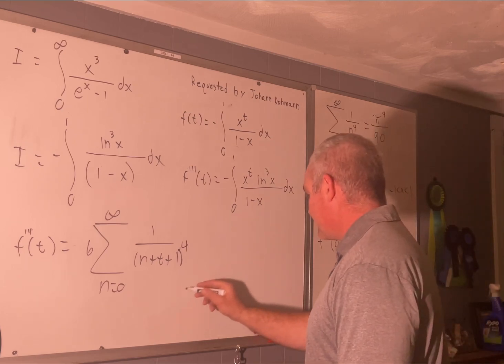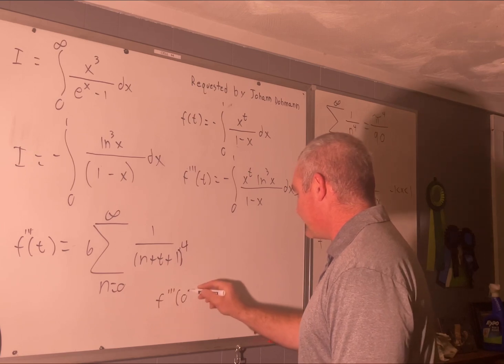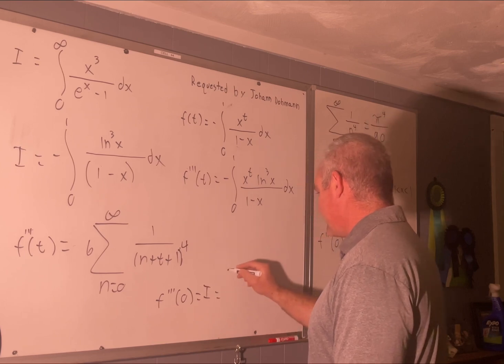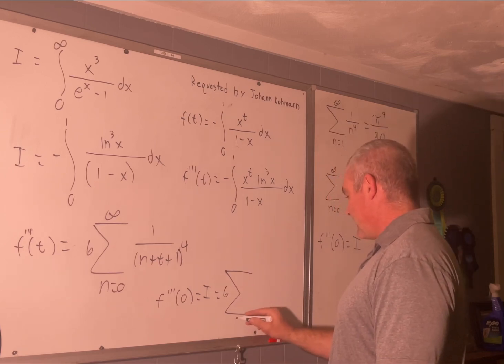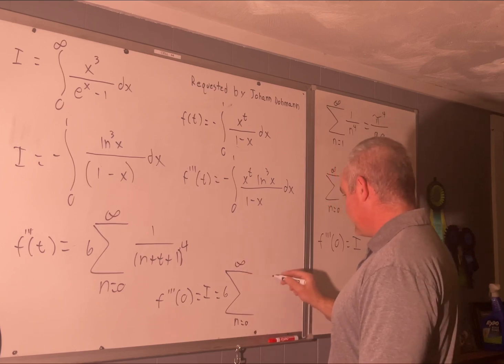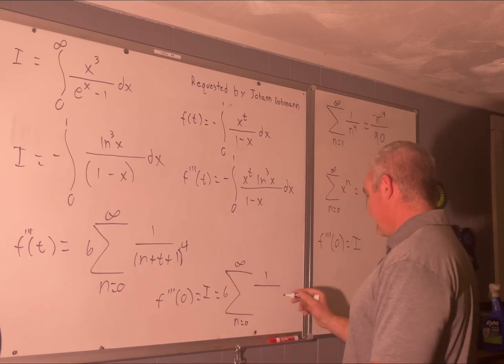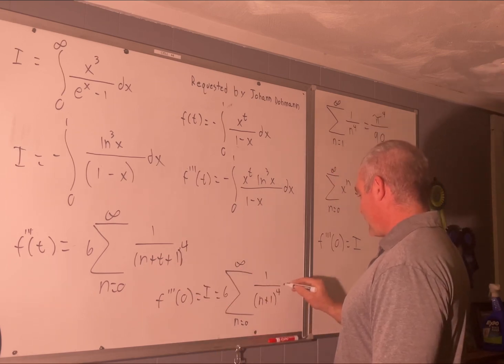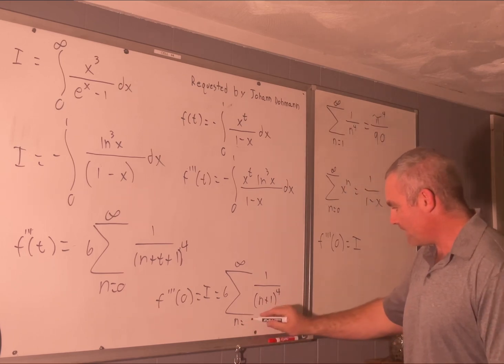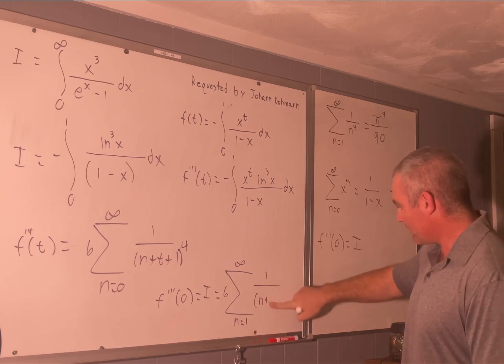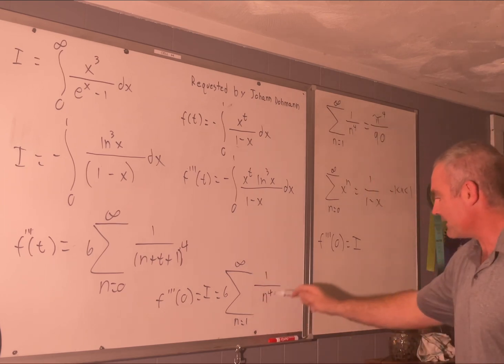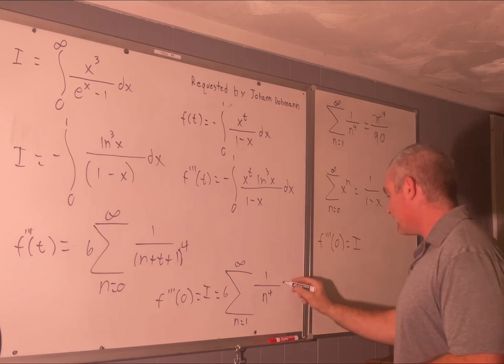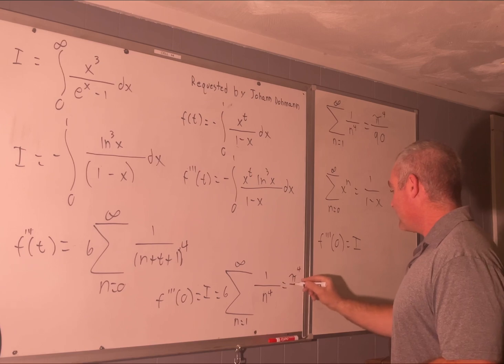Well, let's see. f triple prime evaluated at 0 is equal to i, which in turn is equal to the sum of this thing where t is equal to 0. So that's going to be 6 times n going from 0 to infinity of 1 over n plus 0 plus 1 to the fourth. That's n plus 1 to the fourth. Advancing our index on n by up 1 and then subtracting 1 from all the n's inside our sum will give us 1 over n to the fourth. And we know that this sum right here, we stated it, that's equal to pi to the fourth over 90. So 6 times that is going to give us pi to the fourth over 15.